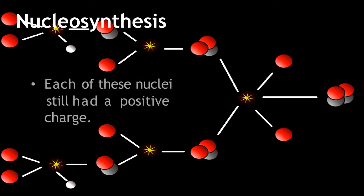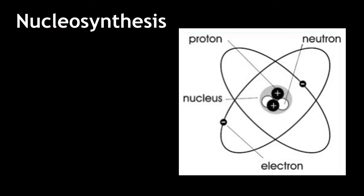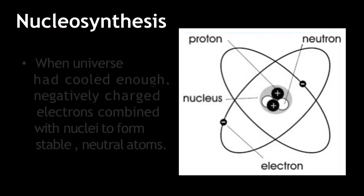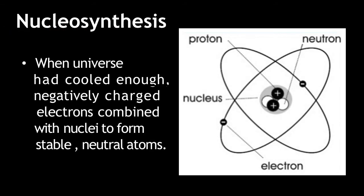Each of these nuclei still had a positive charge. When the universe had cooled enough, the negatively charged electrons combined with the positive nuclei to form stable, neutral atoms.